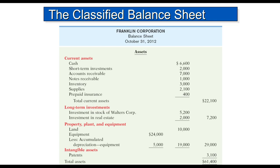For example, here we have Franklin Corporation at one point in time — end of business October 31st, 2012. Here you have the four categories: current assets, long-term investments, property, plant and equipment, and intangible assets. So there you have the four categories of assets.